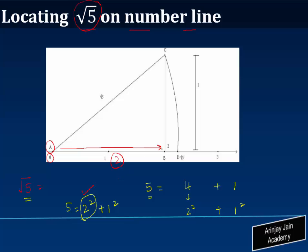At point B we are going to draw a perpendicular to the number line, and the length of this perpendicular is going to be one unit, which is expressed over here.